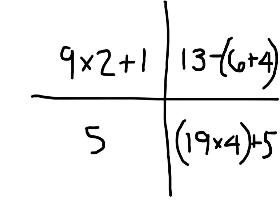All of these are also expressions. So you've got 9 times 2 plus 1, which is an expression where we have two operations — the multiplication and the addition. And in later videos, what they'll end up saying is that you will do multiplication first, and then your addition.